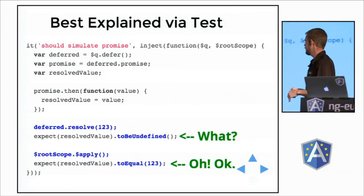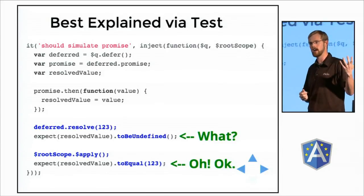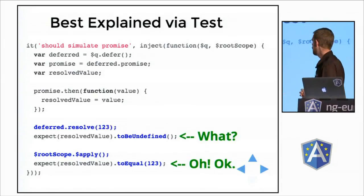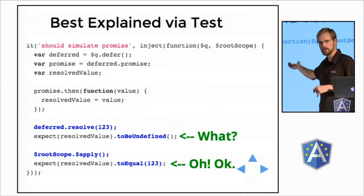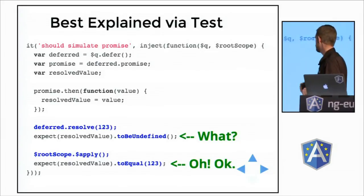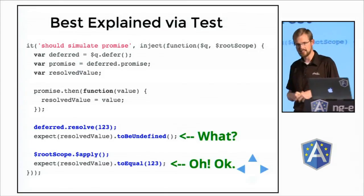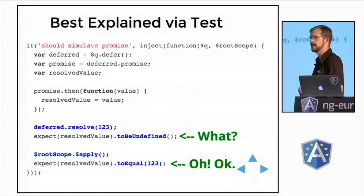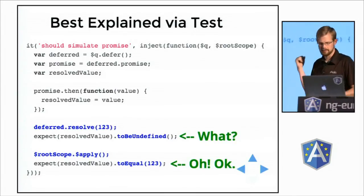I wanted to show you a little test to demonstrate that last point. If you use a deferred object outside of an Angular-aware context outside the digest loop, you might be surprised to find that your methods simply aren't being called until the next digest loop. This test is taken from the Angular code itself. We set up a deferred object and a promise, set up a callback to save off the resolved value, then tell the deferred to resolve with 1, 2, 3. If you immediately inspect the resolved value, it is still undefined. But then if you call apply on the root scope, you find it to be resolved. The queue service is Angular-aware and works with the digest loop exclusively.